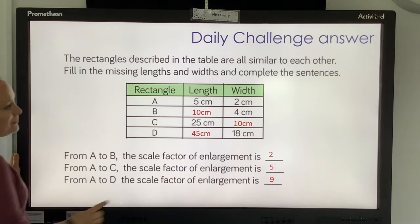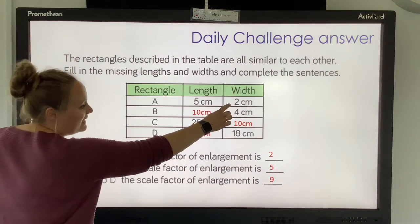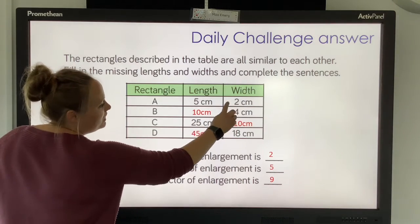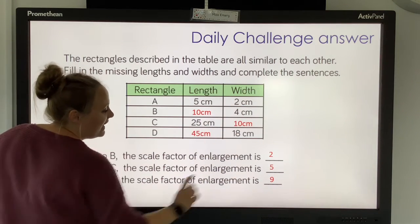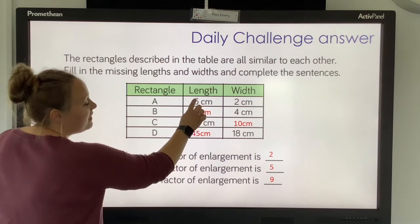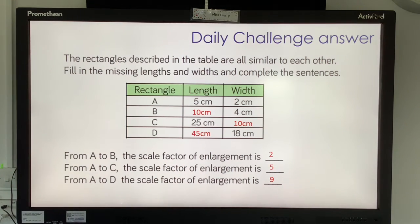Then from A to D, you didn't have the information here, but you did over here. 2 to 18, or 2 times 9 is 18. So your scale factor of enlargement is 9. And then 5 times 9 is 45, so your missing length was 45. Well done if you followed all of those steps and you got that correct.